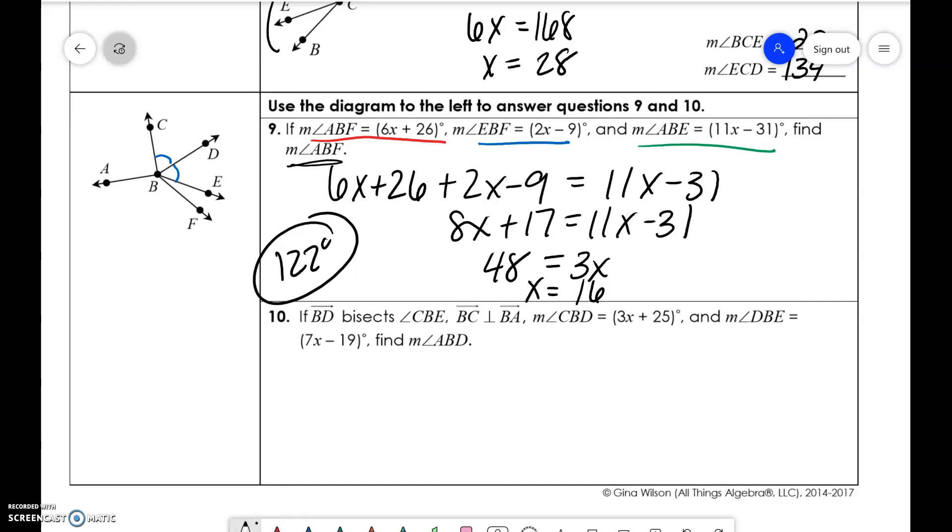So we're told that CBD is 3x plus 5 and DBE is 7x minus 19. So we're setting those two things equal to each other. All right. Then we get 4x is equal to 44. x is equal to 11.